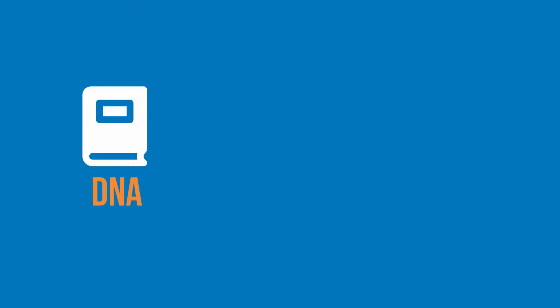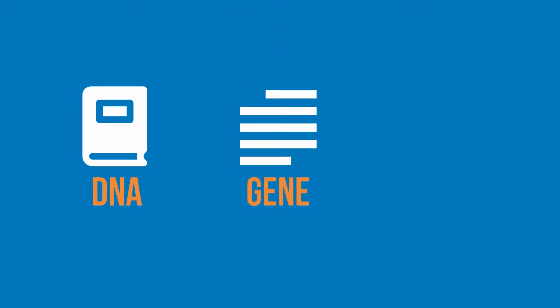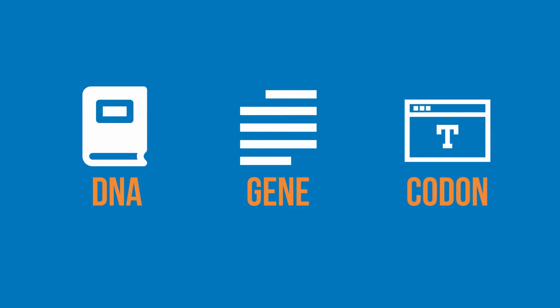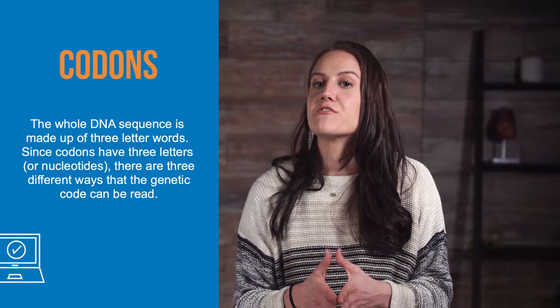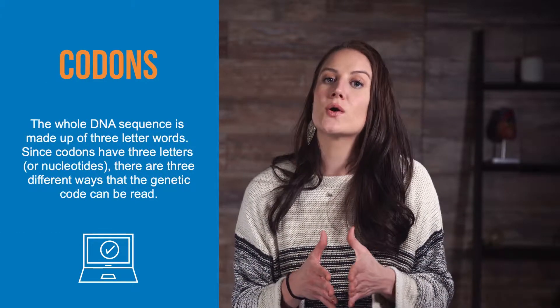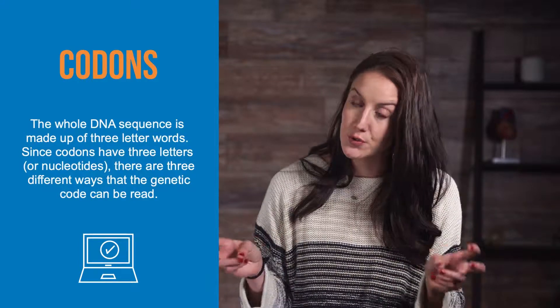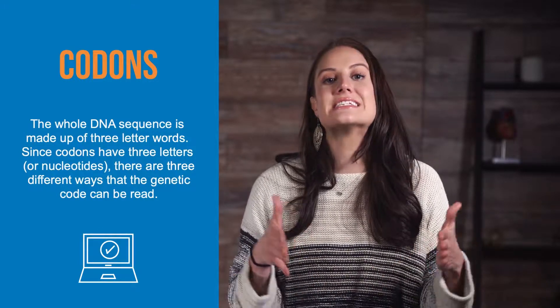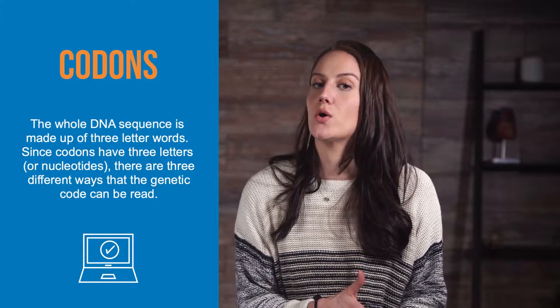We compared DNA to a whole instruction manual, a gene to a paragraph or sentence within that instruction manual, and then we compared a codon to a word within the sentence. The whole DNA sequence is made up of three-letter words, which are our codons. Since codons have three letters, or nucleotides, there are three different ways that the genetic code can be read. This is what we call reading frames — the three different ways the code can be read.